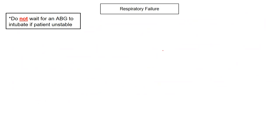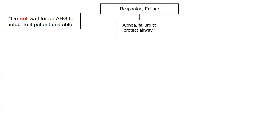The first thing you want to do anytime you see a patient is just do your ABCs. Is the patient apneic? Is the patient failing to actually protect their airway? One of the major things you first look at for failing to protect the airway is — can they talk? If they're talking to you, they seem fine. They're protecting their airway.